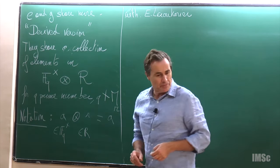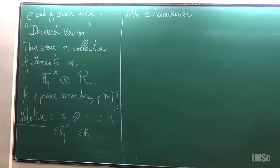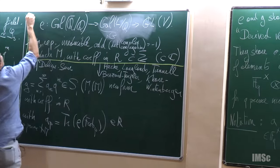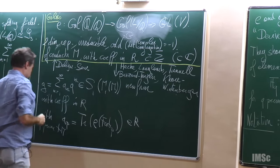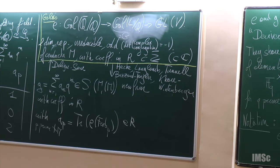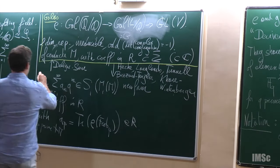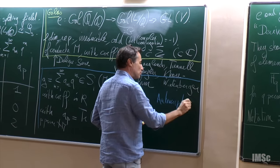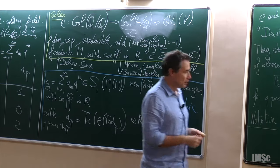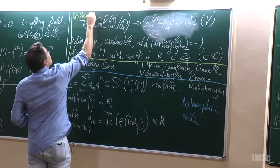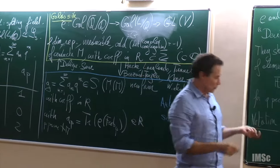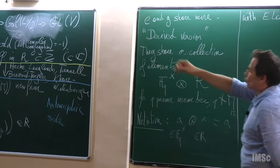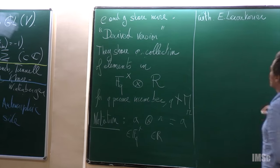Most of my talk will be about explaining the conjecture. So there are two sides: let me call this the Galois side, and the other side is the automorphic side. I need to define this element on the Galois side first, and that's fairly easy.